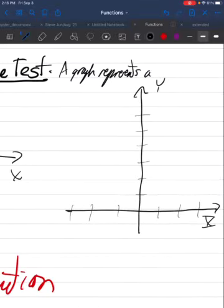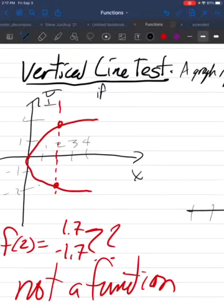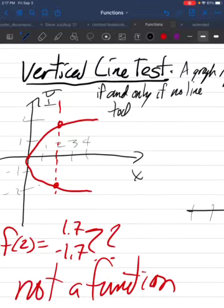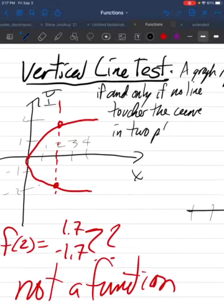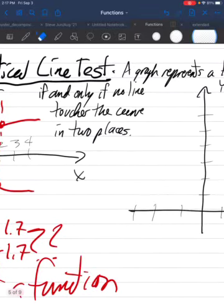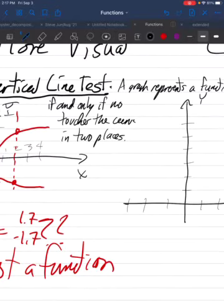So this gives us what's called the vertical line test. The vertical line test says a graph represents a function if and only if no vertical line touches the curve in two places.